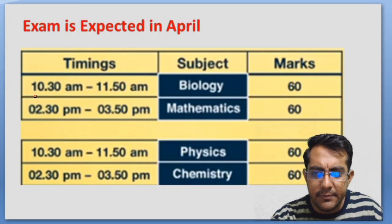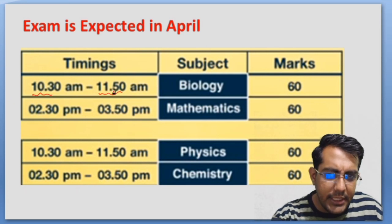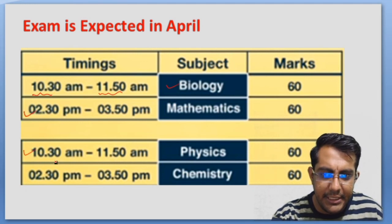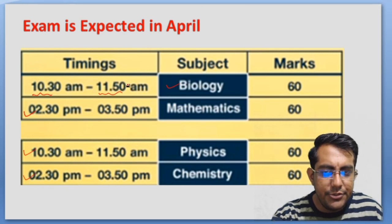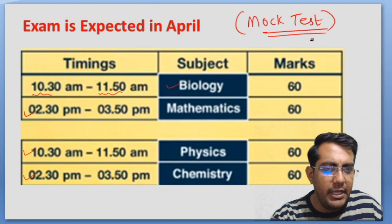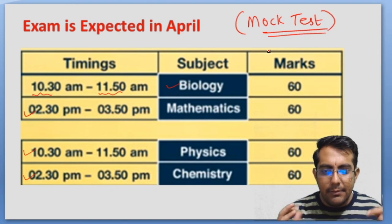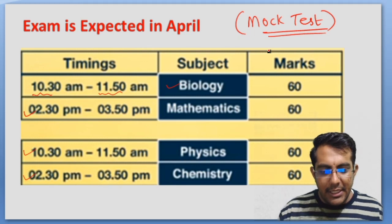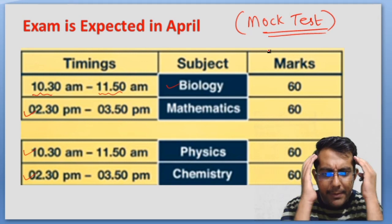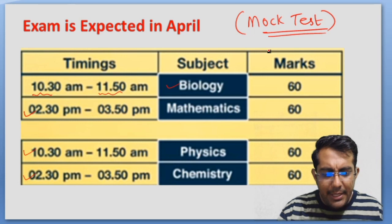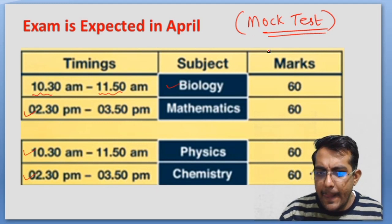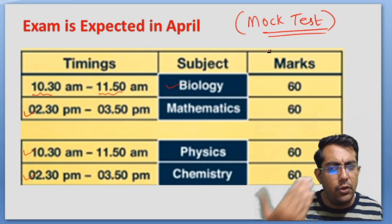Generally the time slot - the exam starts at 10:30 to 11:50. The timing is around 80 minutes for biology, then maths, then physics, then chemistry. Usually this is the time slot. You can practice mock tests in these time durations because you need to prepare yourself mentally. At morning 10:30 or whenever your slot is - JEE slot or KCET slot - prepare yourself biologically so your mind is active at that time. This will boost your score by 10 to 20 percent.